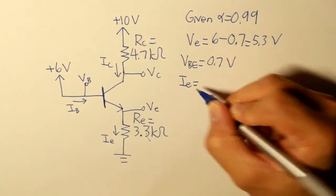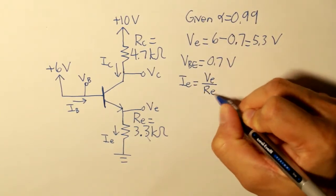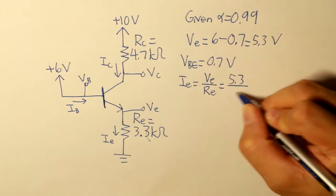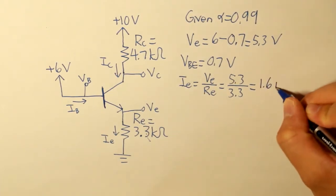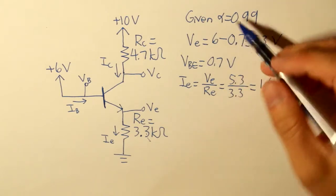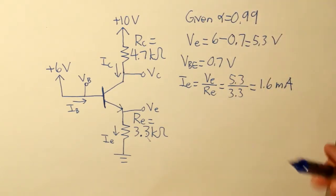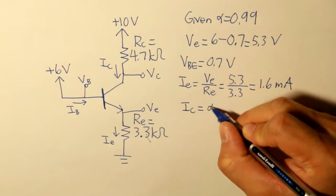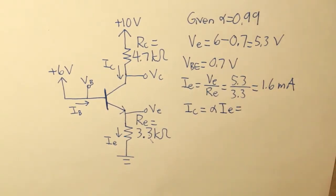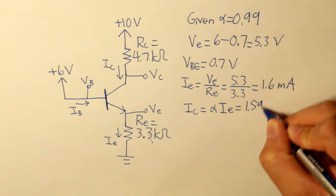And now IE, emitter current, will be equal to VE divided by RE, and that will be equal to 1.6 milliamps. And then applying the common emitter current gain again, IC is equal to alpha multiplied by IE, and what we get is 1.59 milliamps.